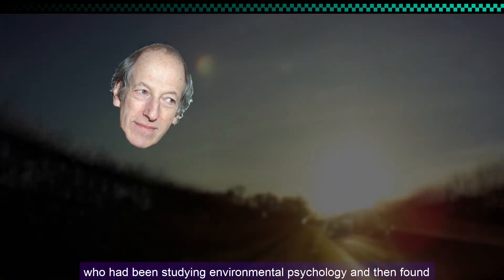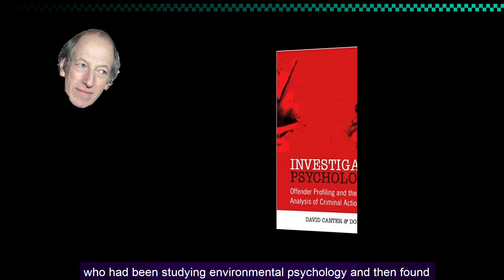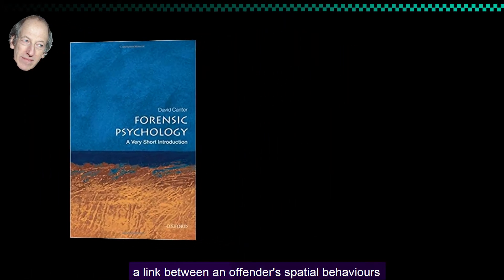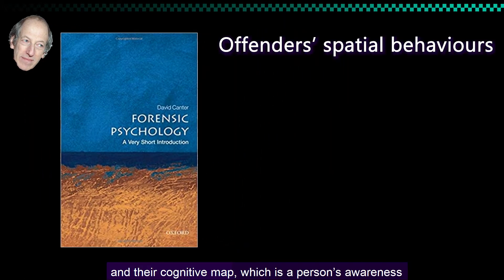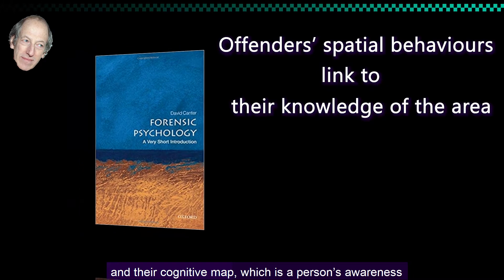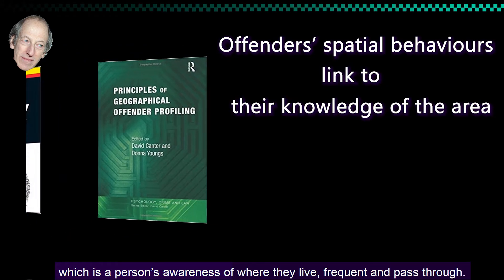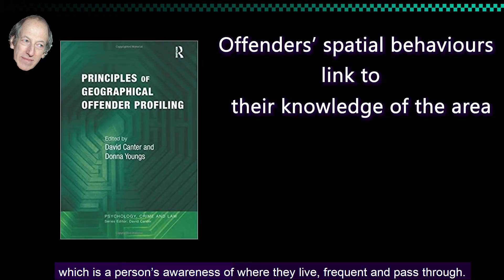The term investigative psychology was first coined by Professor David Canter in 1994, who had been studying environmental psychology and then found a link between an offender's spatial behaviors and their cognitive map, which is a person's awareness of where they live, frequent, and pass through.